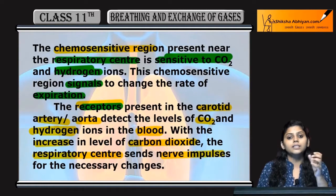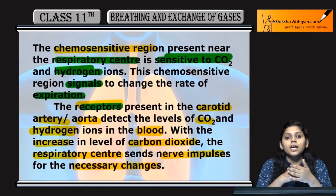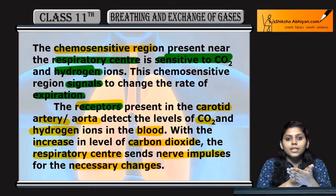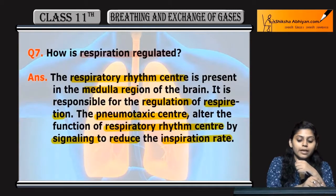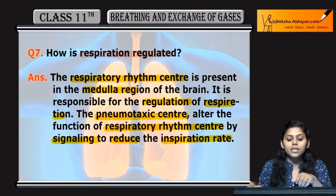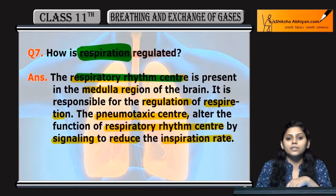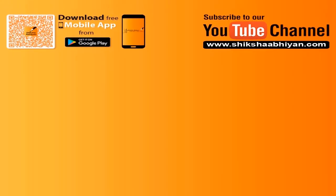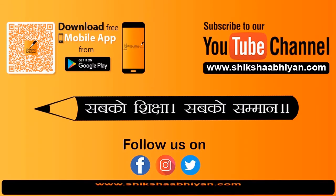Necessary changes kya honge: agar CO₂ ka level badh raha hai body mein, then oxygenation karvayenge aur CO₂ ka level kam karke oxygen ka level badhayenge. Aise hota hai respiration ki regulation — jo karta hai respiratory rhythm center, jo present hota hai medulla region in the brain.